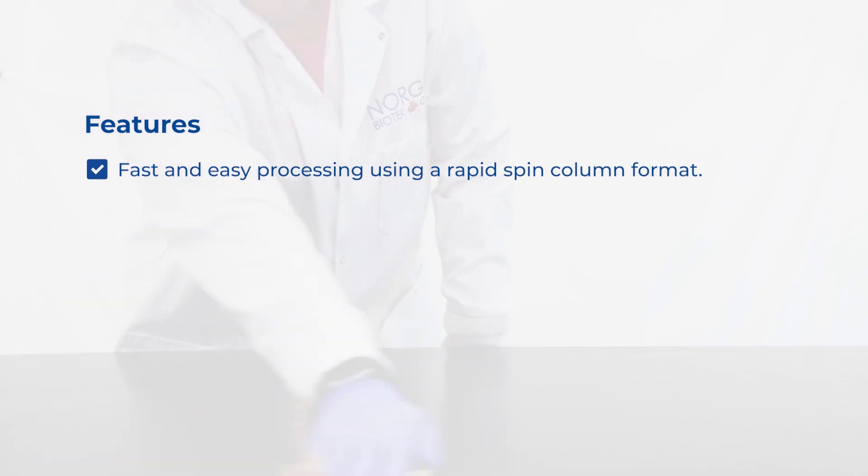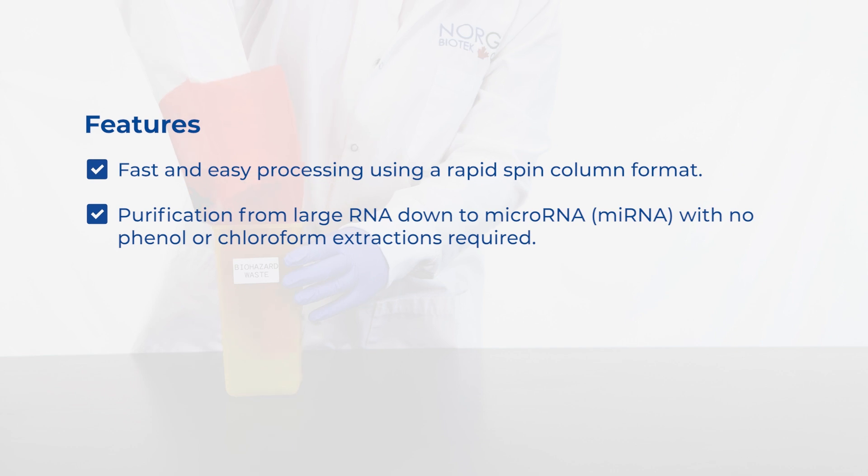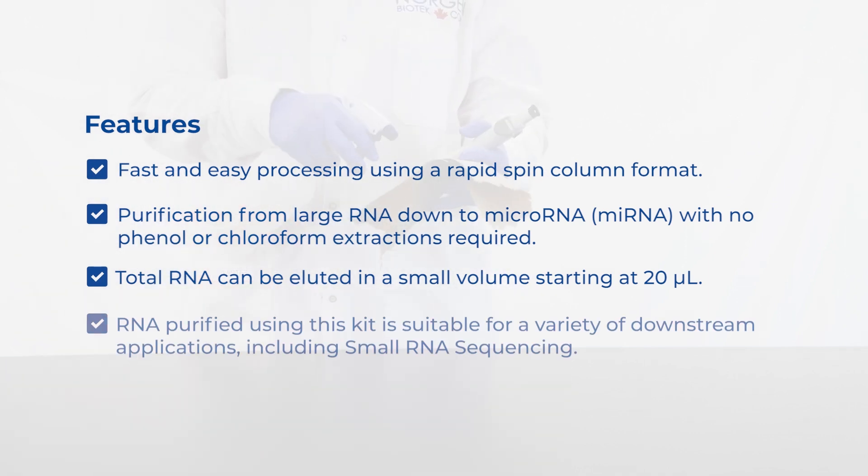This kit offers fast and easy processing using a rapid spin column format. It allows for purification from large RNA down to microRNA, with no phenol or chloroform extractions required. Total RNA can be eluted in a small volume starting at 20 microliters. Purified RNA using this kit is suitable for a variety of downstream applications, including small RNA sequencing.